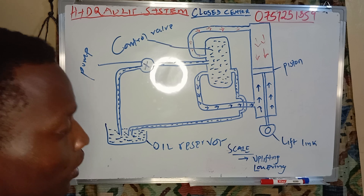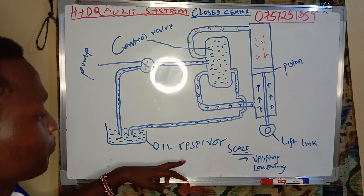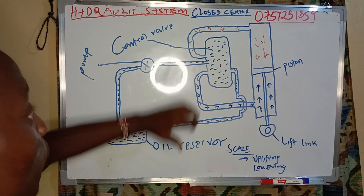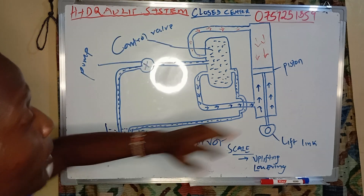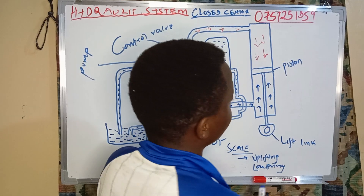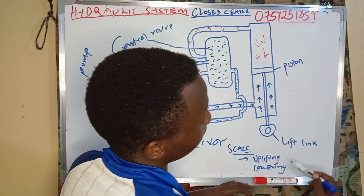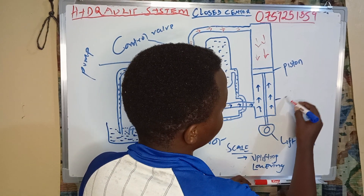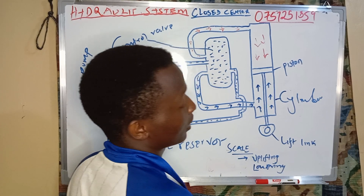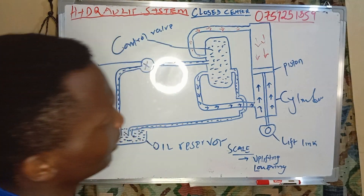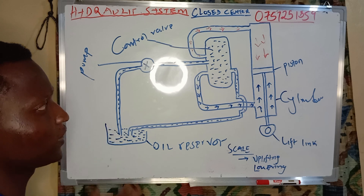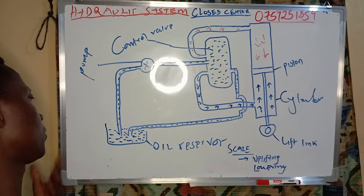So let's go. We have a reservoir, we have a pump, we have a control valve, we have the piston and the cylinder. We also have the lift link — it is a cylinder — and how these work together in lifting, lowering, and neutral.